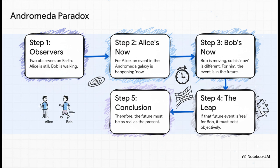But, step three, because Bob is moving. Even just walking, his slice of now is tilted compared to Alice's. Across millions of light years, that tiny tilt makes a huge difference. For Bob, the events that are happening now in Andromeda could be a full week in Alice's future. And here's the kicker. Step four. If that future event is happening in Bob's present moment, then it has to be real, right? It's not a potential event. For him, it's reality. Which leads to the mind-blowing conclusion in step five. The future must already exist. It has to be just as real and solid as the present.